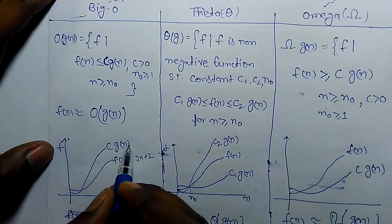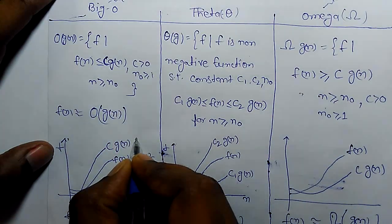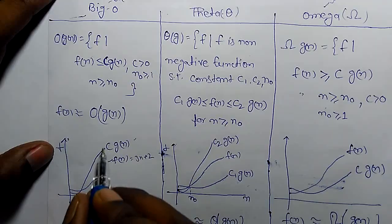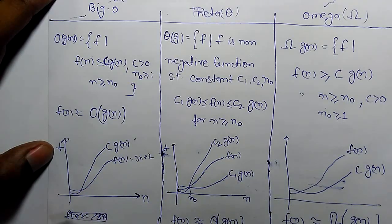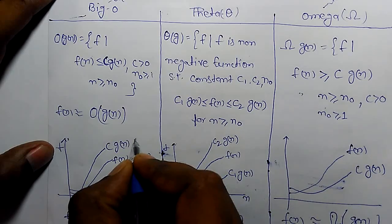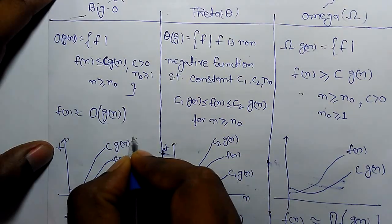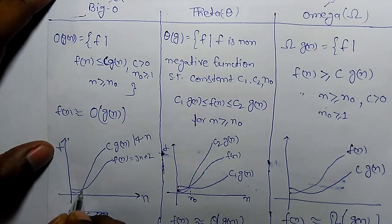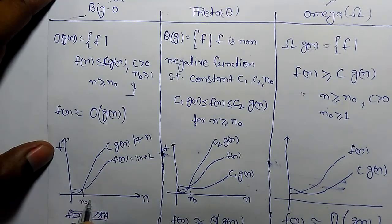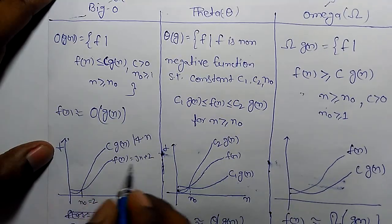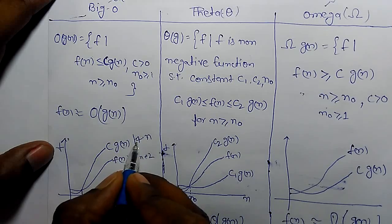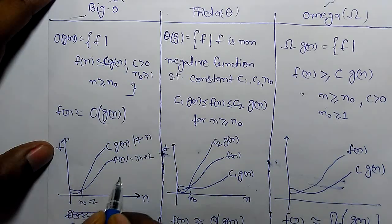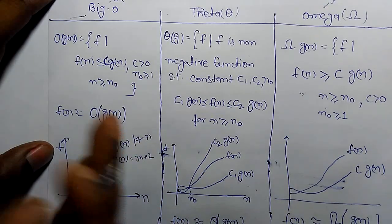If we find any C of G of N, for example C equals 1, if we take 1 and G of N is N, will it be above F of N? No. For input more than 1, it will not be. If we take C equals 4 for N is greater than equal to 2, that is N0 is greater than equal to 2, F of N equals 3N plus 2, then it will be above the F of N.